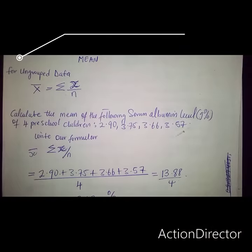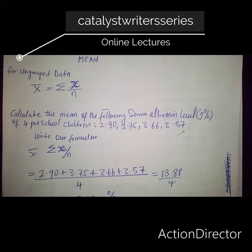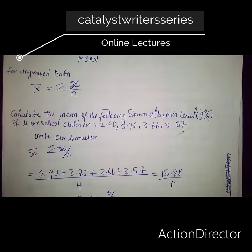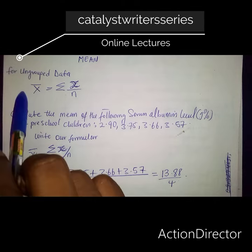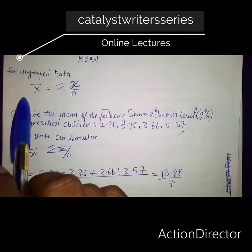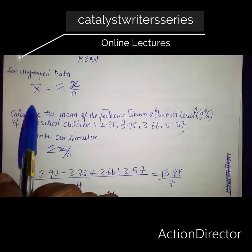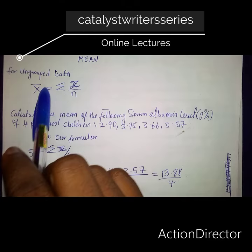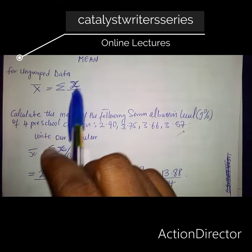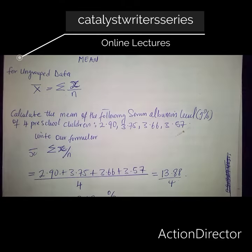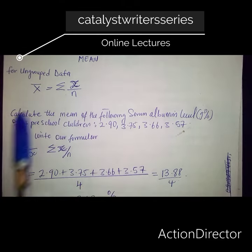Let us talk about calculation of mean for ungrouped data. The formula for calculation is x-bar, which means mean equals summation of x divided by n.